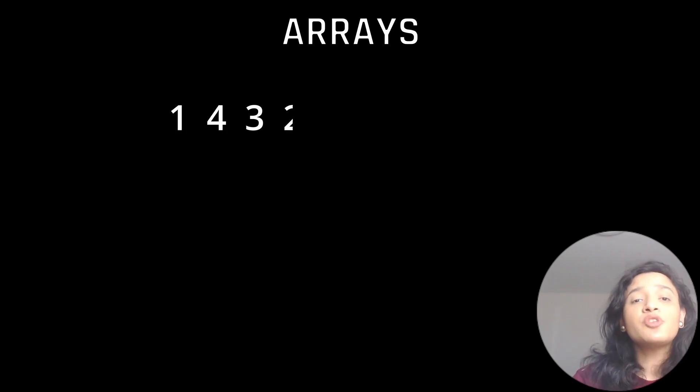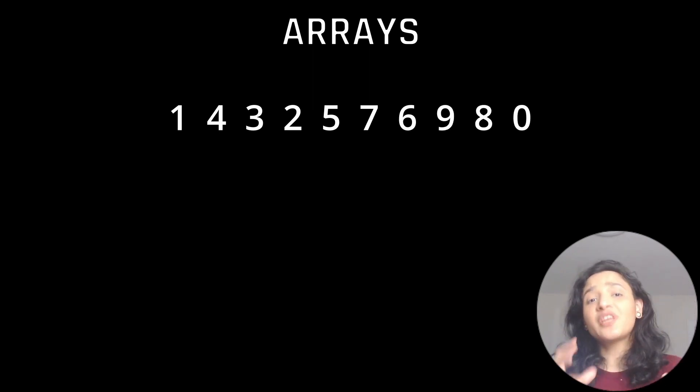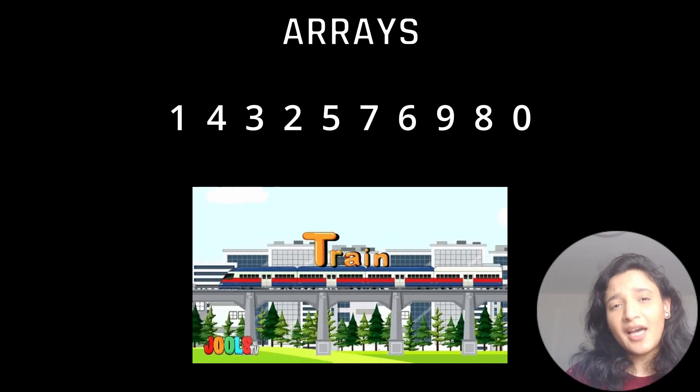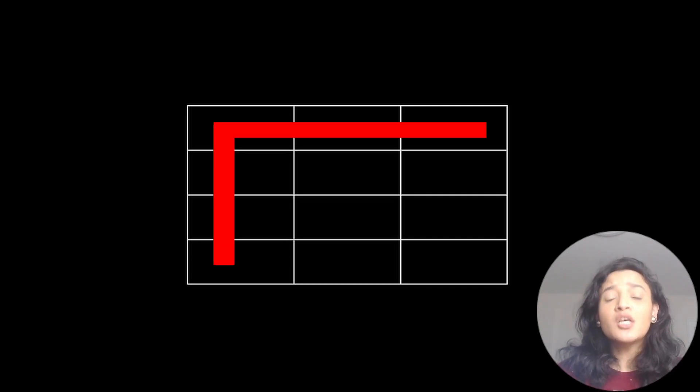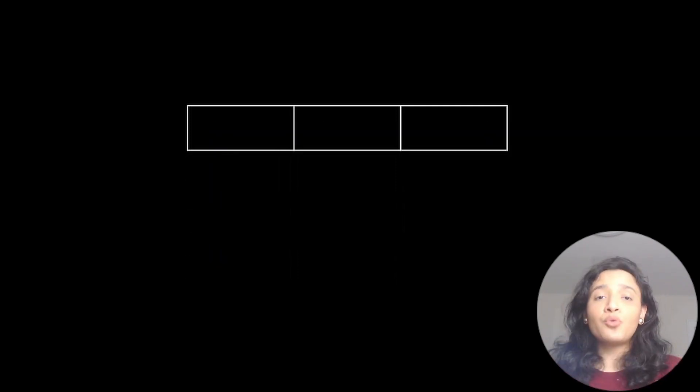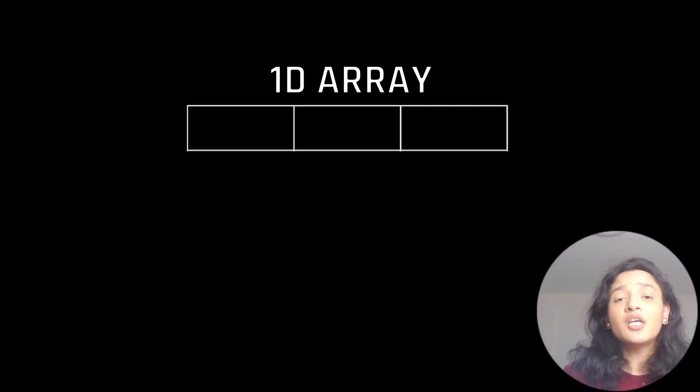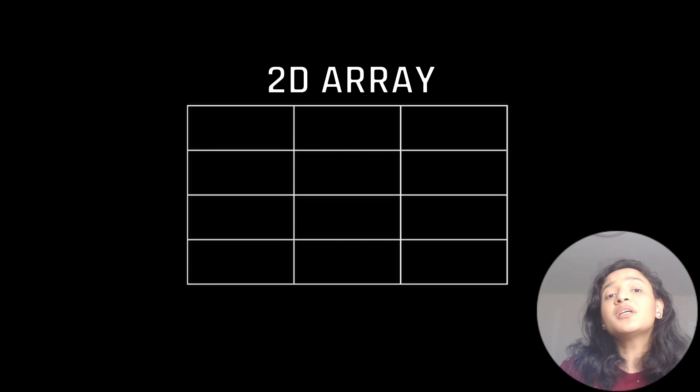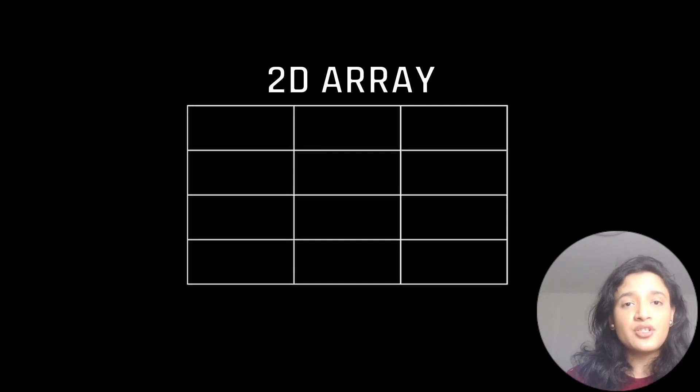The first concept is arrays. Arrays is the simplest data structure which stores your data in a continuous fashion — meaning if you want to store 10 integers, they'll be stored one after the other, similar to train carriages. The simplest example of an array is a table: a single row can be thought of as a one-dimensional array, and an entire table as a two-dimensional array.